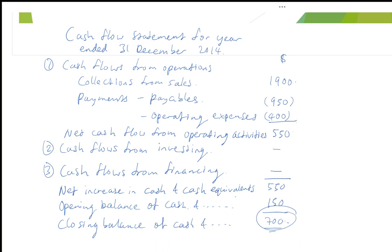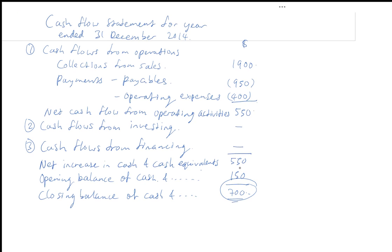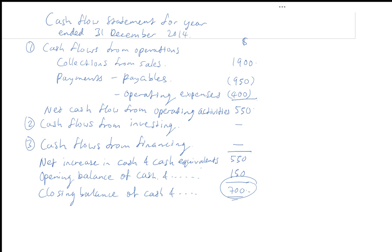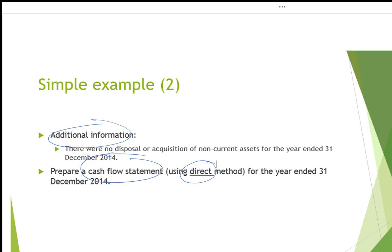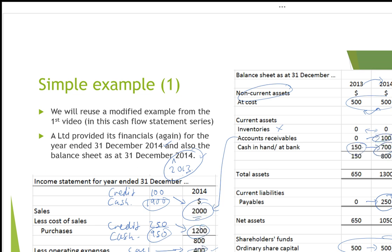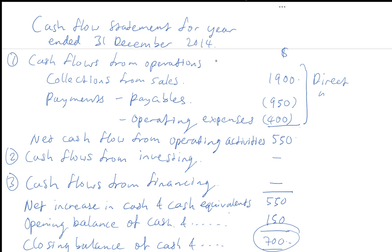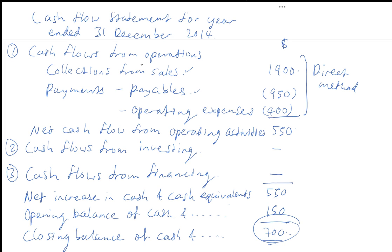That's how you do it using the direct method. In actual exams for ACCA or FIA it will be more complicated, and even more so for a Masters in Professional Accounting. The unique thing about the direct method is that operating cash flows are derived by taking collections from sales minus all payments.